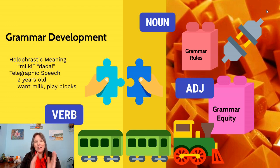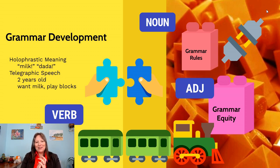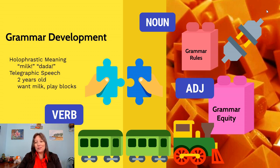It looks more like a telegraph — just the essential things. With the advent of social media, tweets and emojis are making even adults speak more telegraphically. But in young childhood, this is typical and normative. Eventually, we start adding the adverbs and prepositions, and it starts to make a lot more sense.